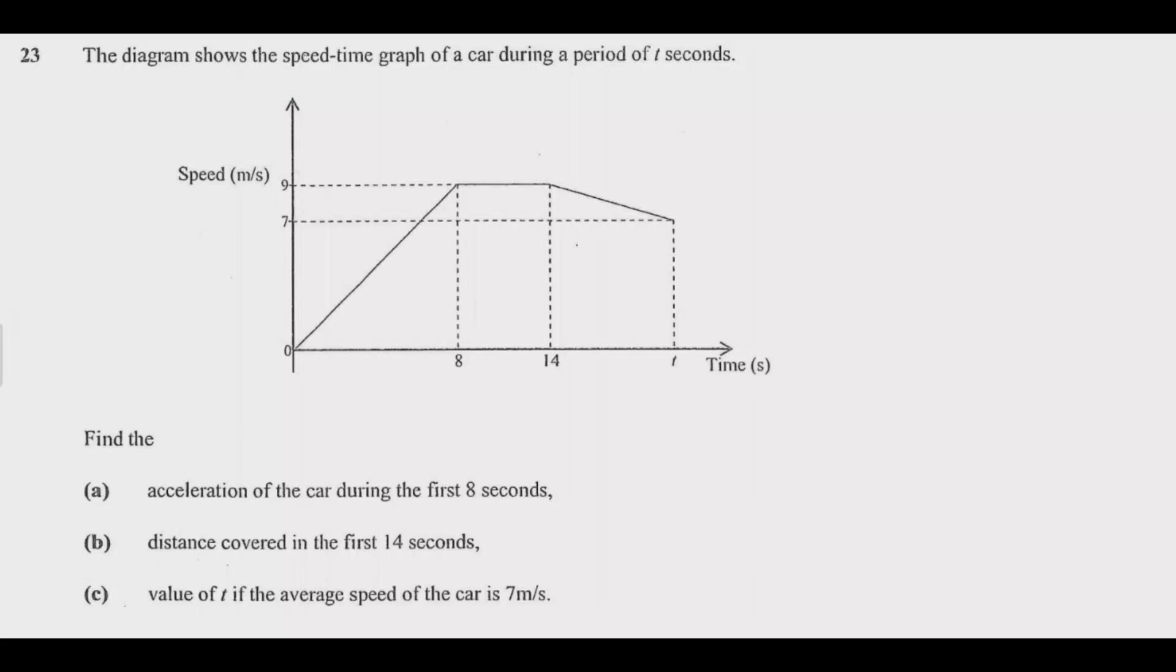So let us start with question A. We are asked to find acceleration of the car in the first 8 seconds, which is this period. So how do you find acceleration? Acceleration is given by final minus initial velocity over final time minus initial time.